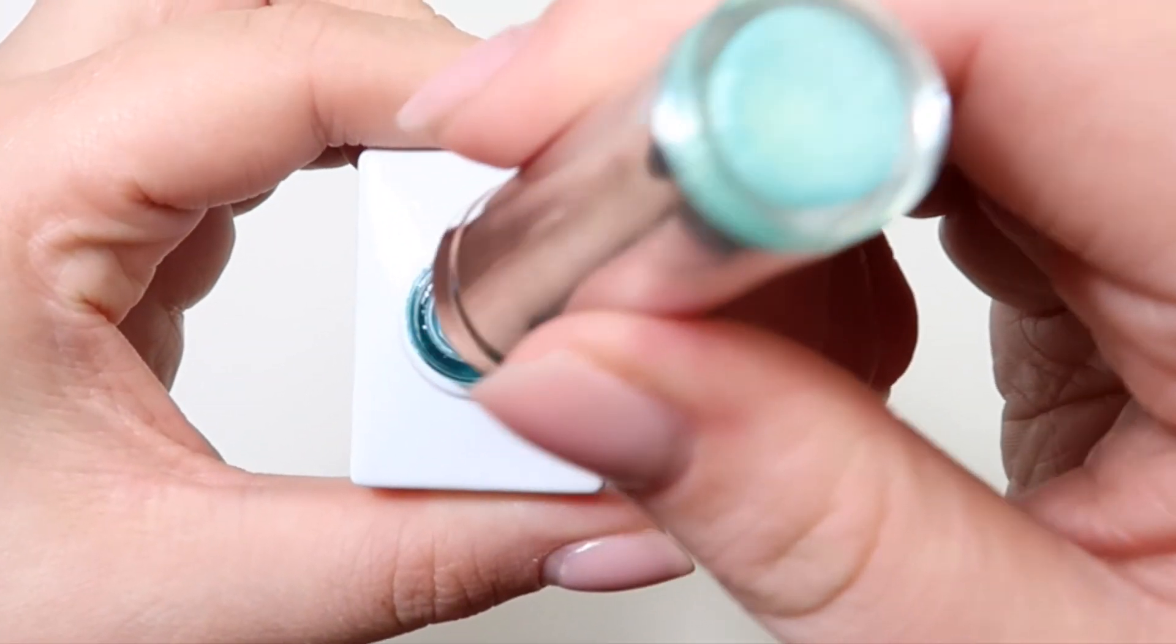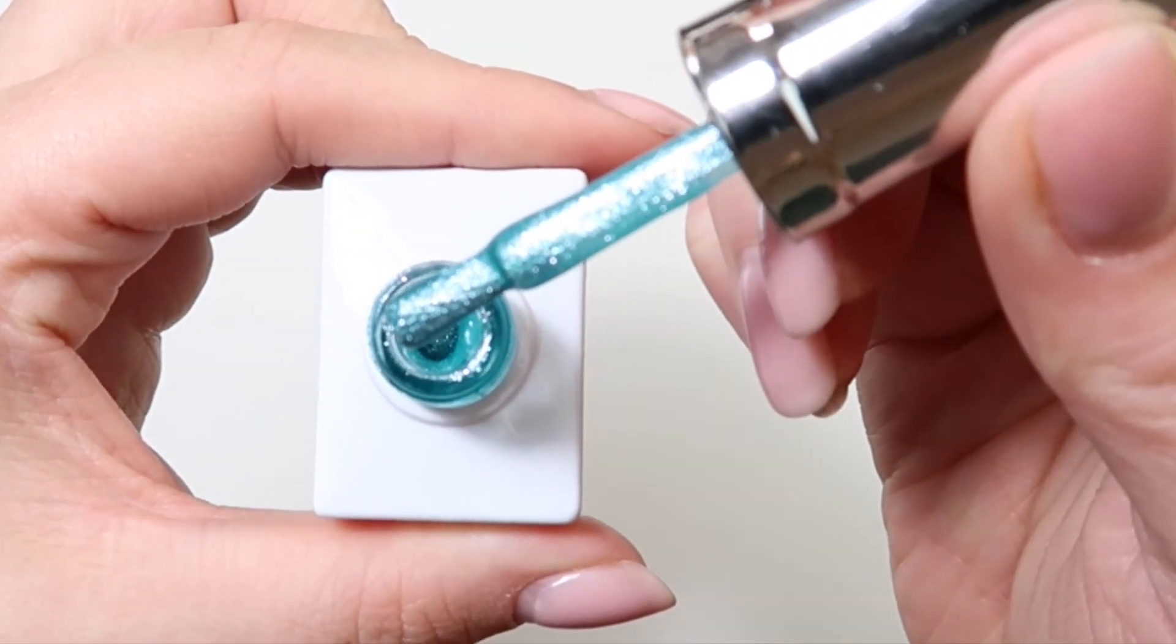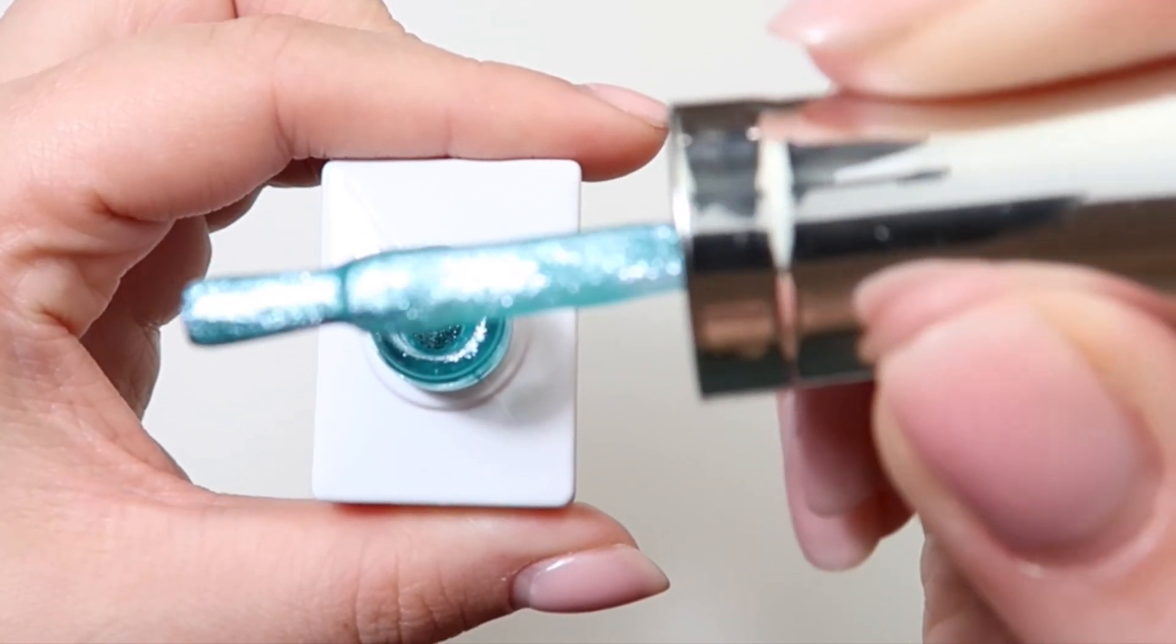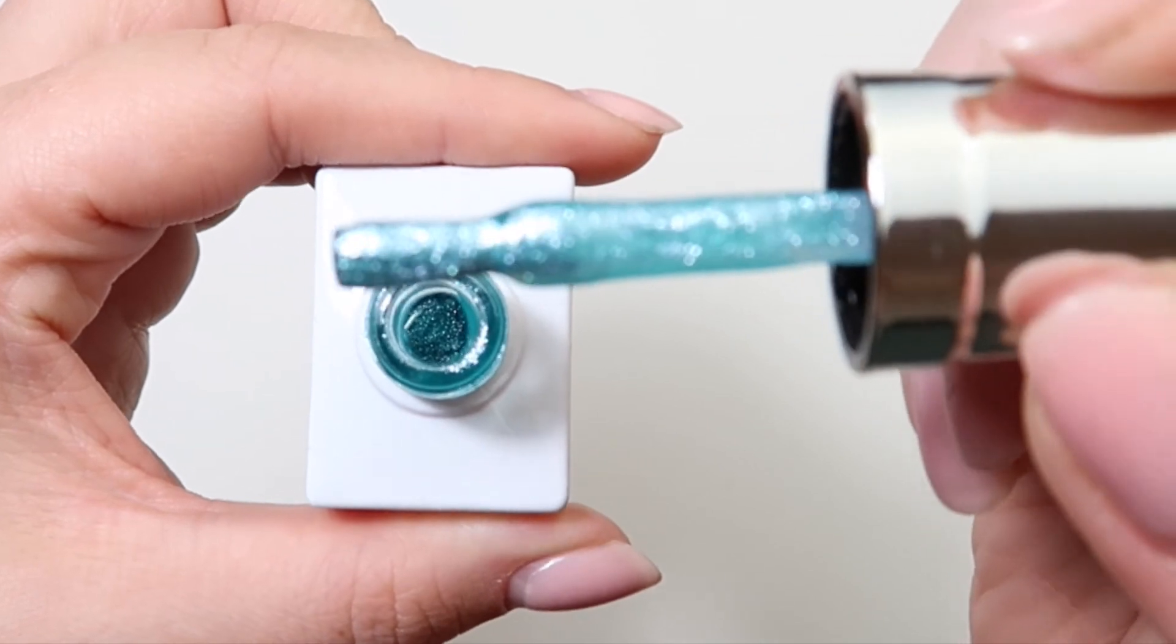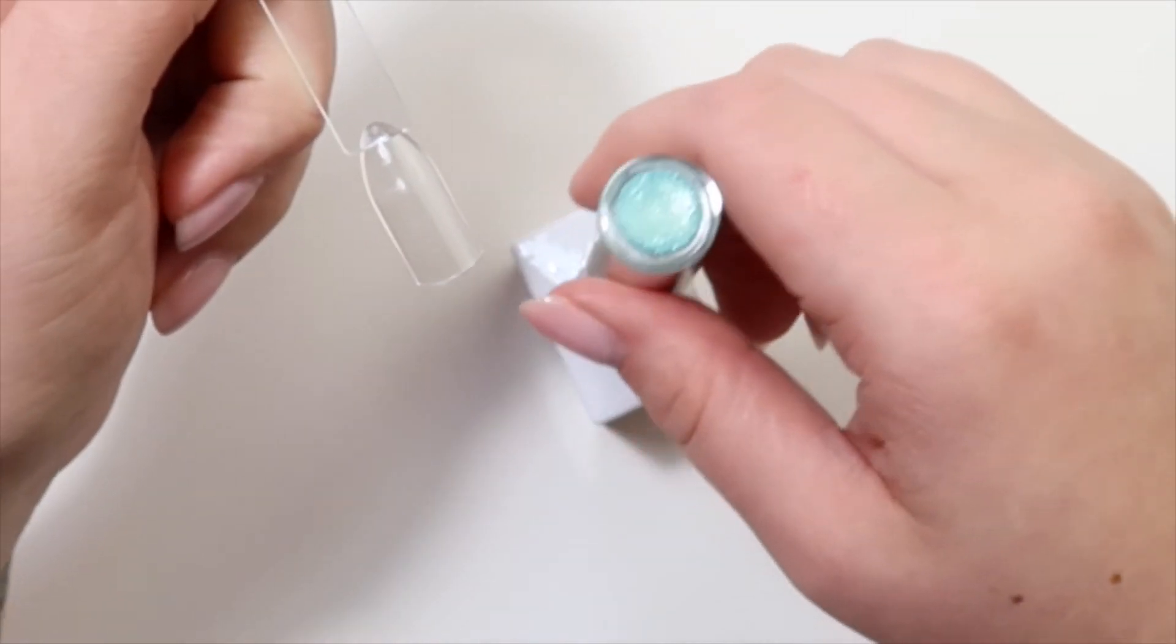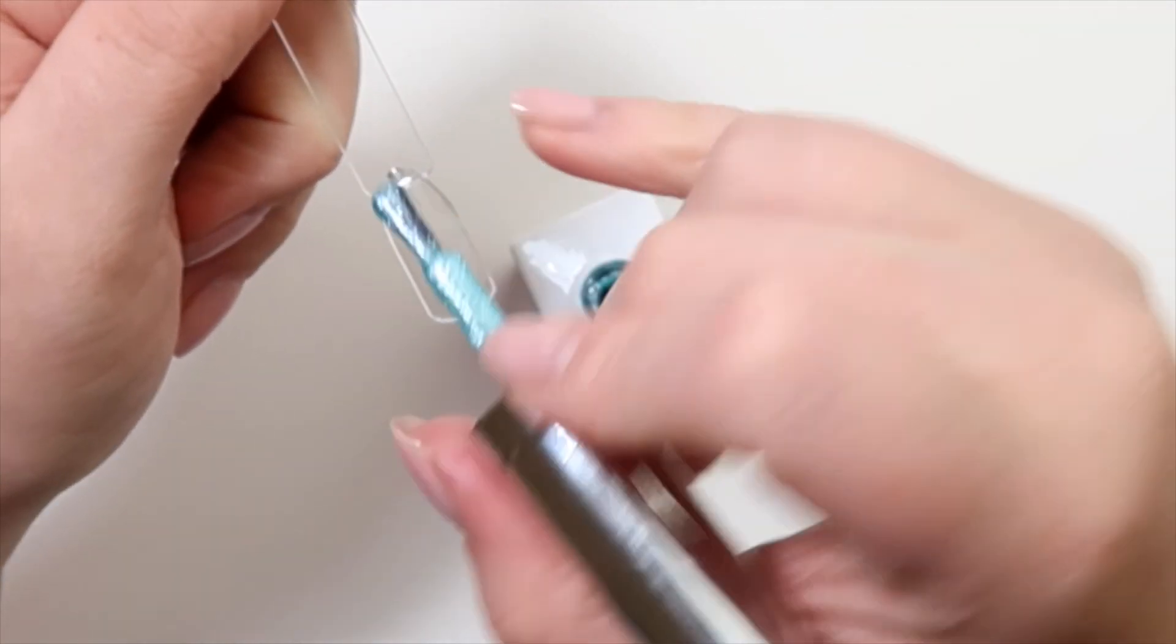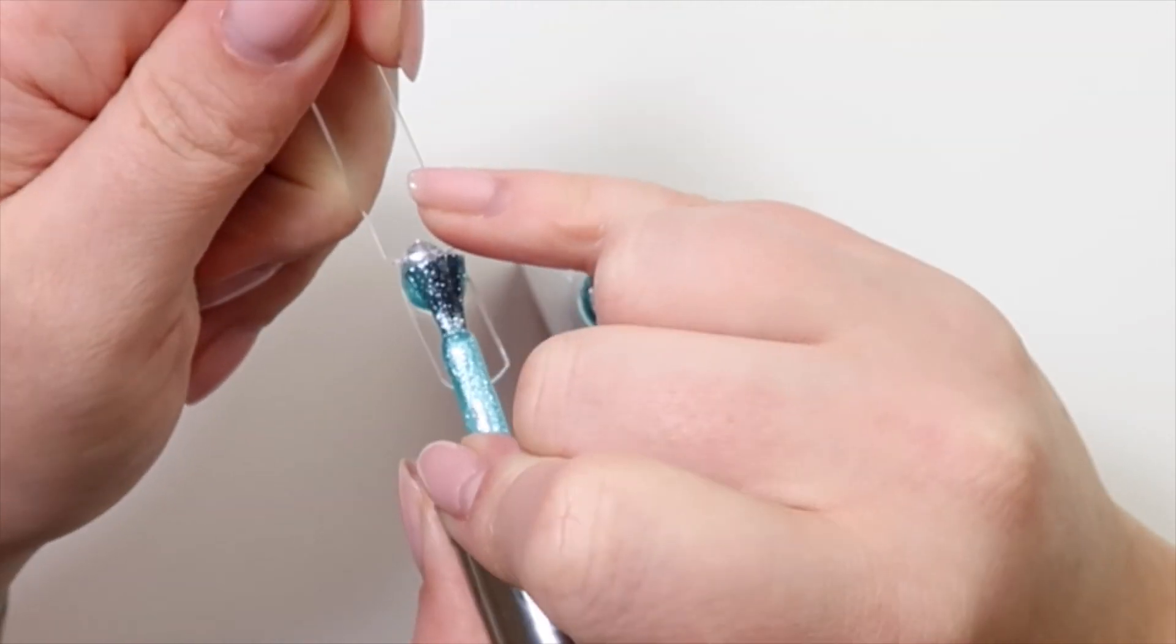Last but not least we've got Bora Bora. So this one is a proper gorgeous ocean blue colour with lots of silver iridescent glitter in. I know it is part of the summer collection and it will be perfect for a summery colour too, but I can see this one being really popular at Christmas also.